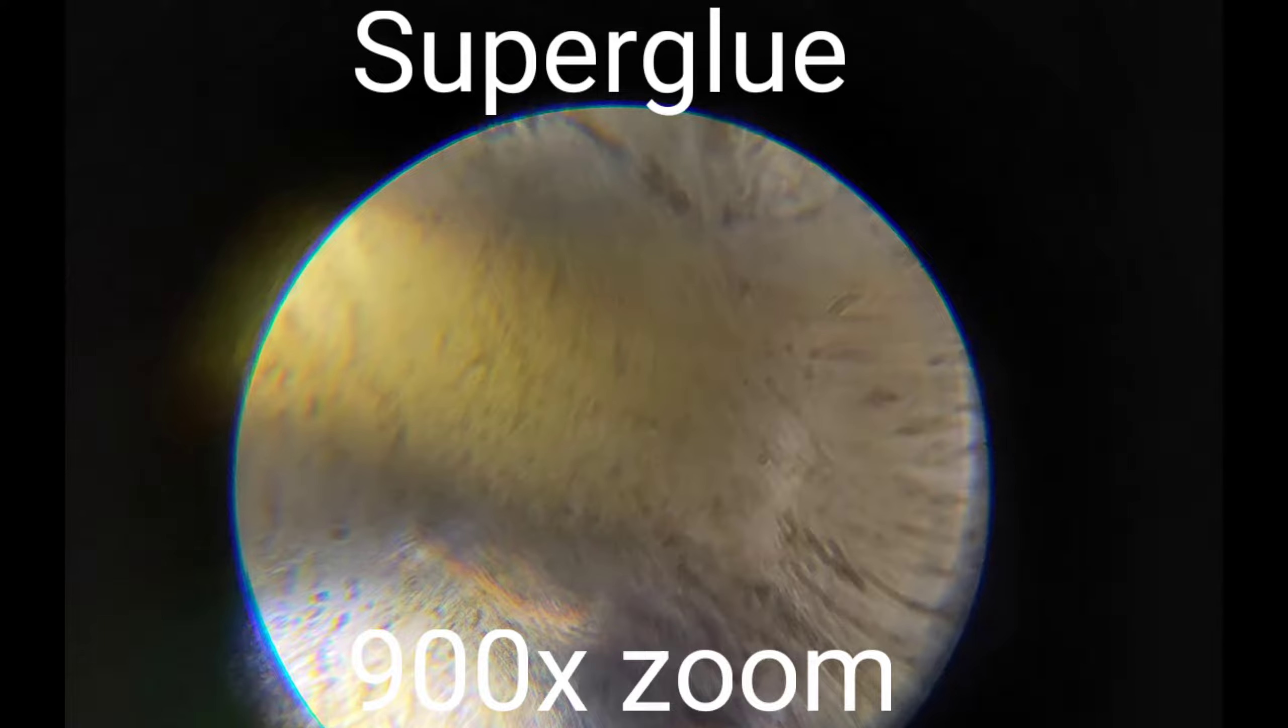So to start off, we have super glue at 900 times zoom. So what you see, the dots are actually bacteria in the glue. So if you're ever wondering what's in super glue at 900 times zoom, that is it.